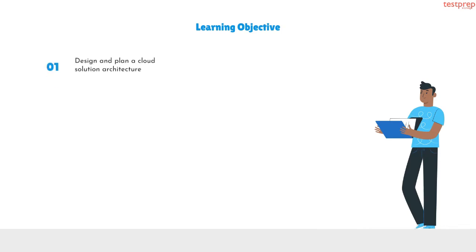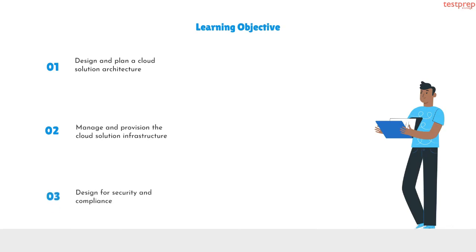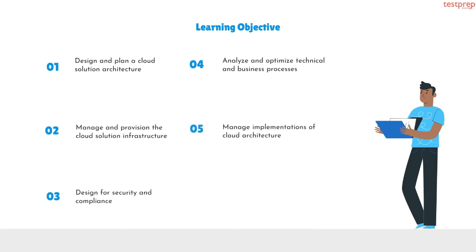First, design and plan a cloud solution architecture. Second, manage and provision the cloud solution infrastructure. Third, design for security and compliance. Fourth, analyze and optimize technical and business processes. Fifth, manage implementations of cloud architecture. Sixth, ensure solution and operations reliability.